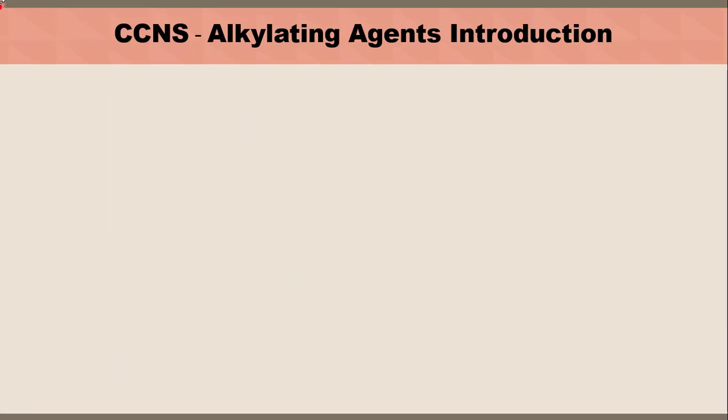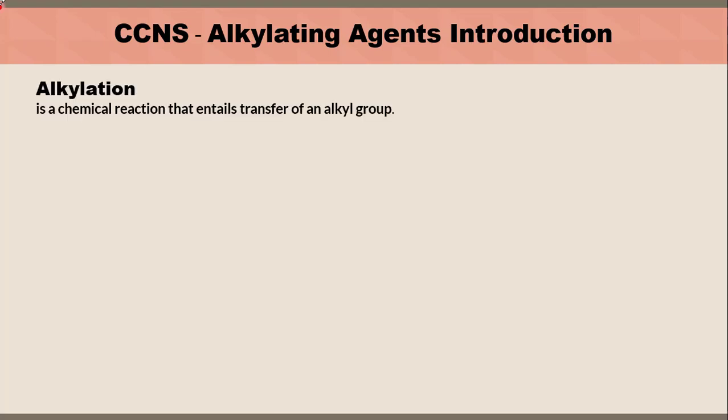In this slide, we're going to learn what the alkylation process is, where it happens, and how it happens. The alkylation process is a chemical reaction that entails the transfer of an alkyl group.